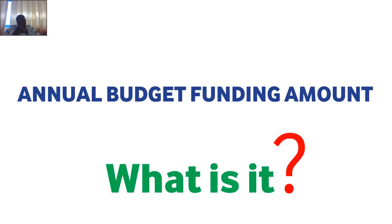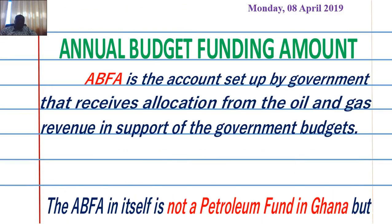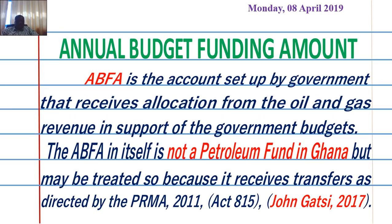In any fiscal year, oil companies are required to provide statistics to the Ministry of Finance indicating their projected volume of production and expected average market price, so that the government of Ghana can estimate expected petroleum revenue. The law requires that not more than 70% of that benchmark revenue should be ceded to the ABFA. The ABFA itself is not a petroleum fund in Ghana, but it may be treated as one because it receives transfers as directed by the Petroleum Revenue Management Act 815 of 2011.